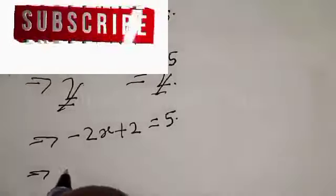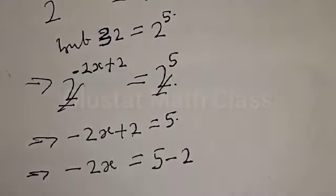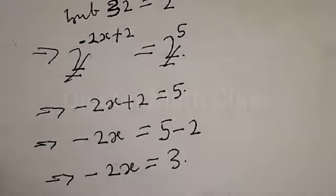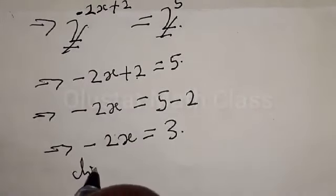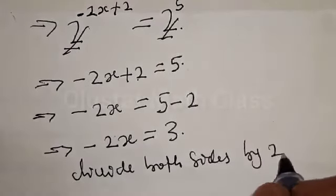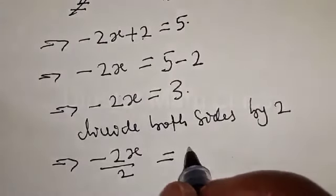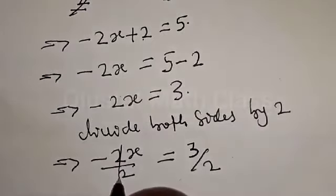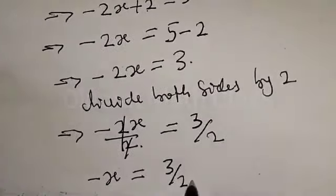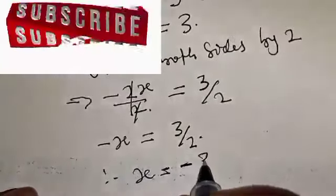This implies that minus 2s equals 5 minus 2, which gives minus 2s equals 3. Then dividing both sides by minus 2, s is equal to minus 3 over 2.